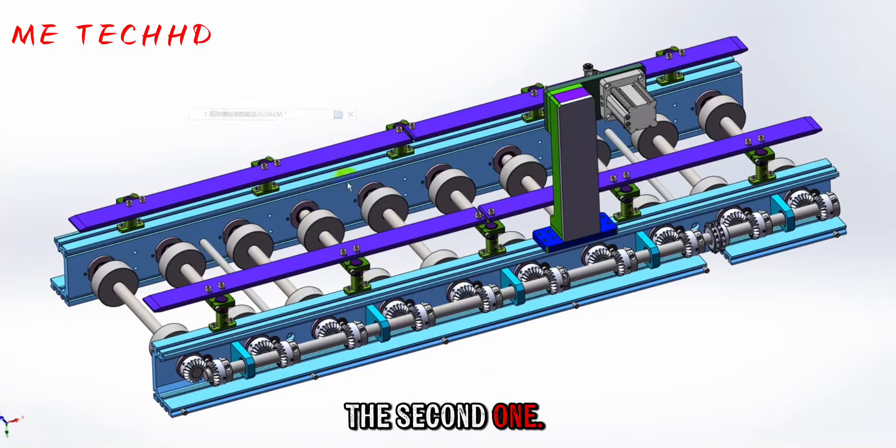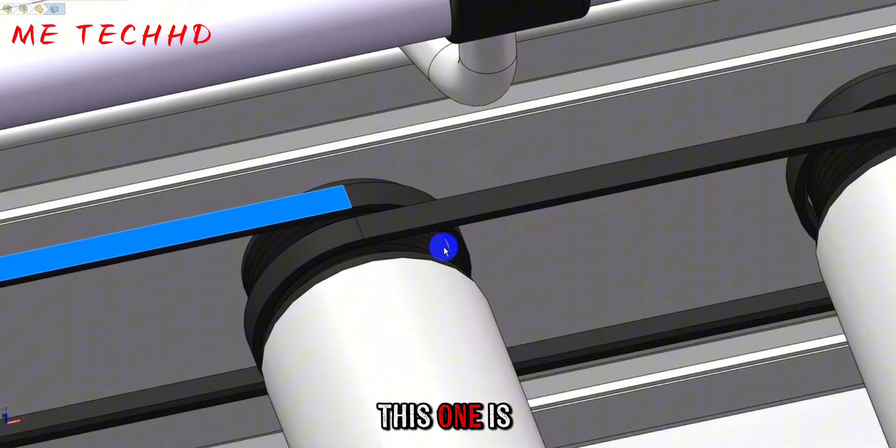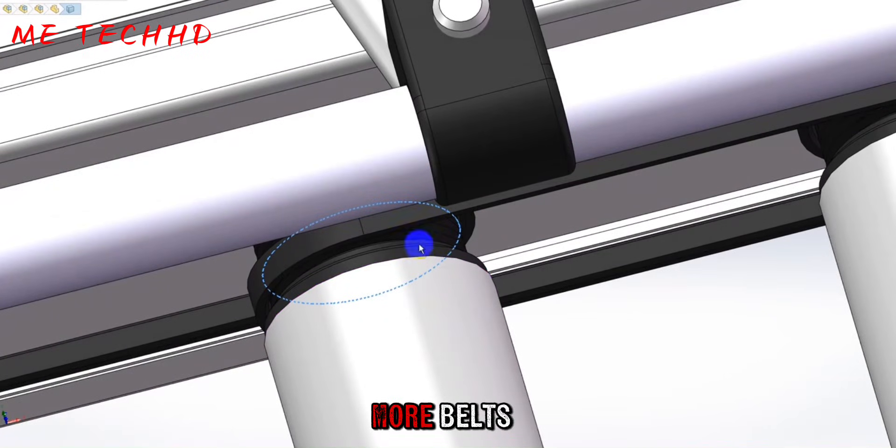Let's look at the second one. The second type is a belt. Among the belts, this one is called more belts.